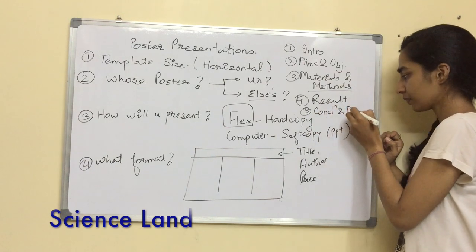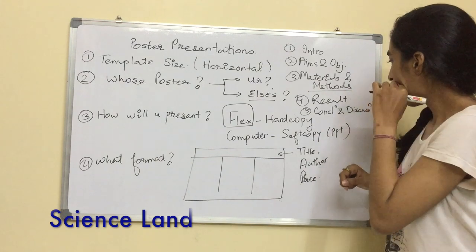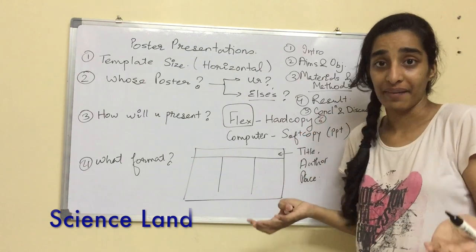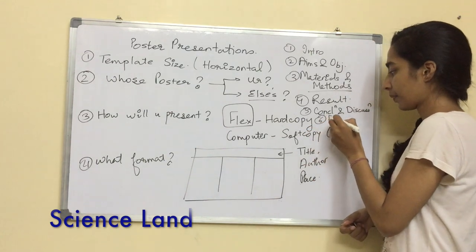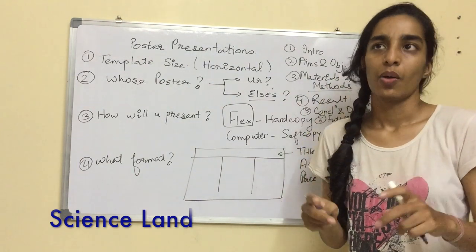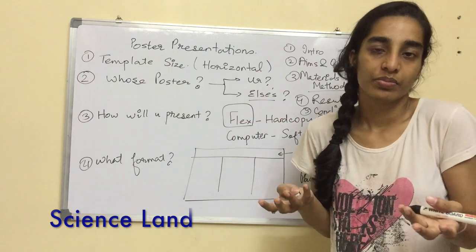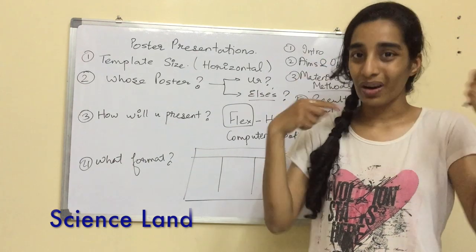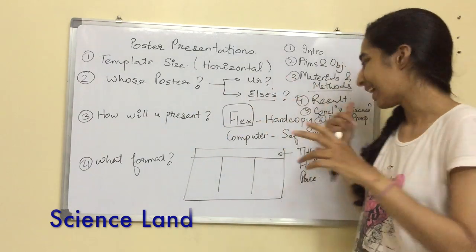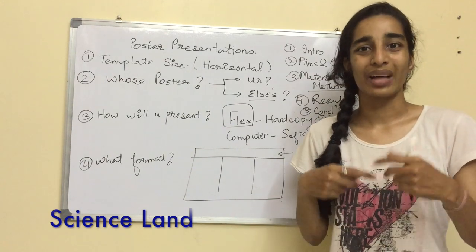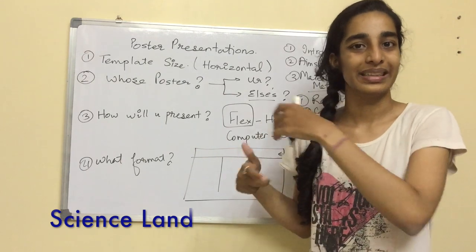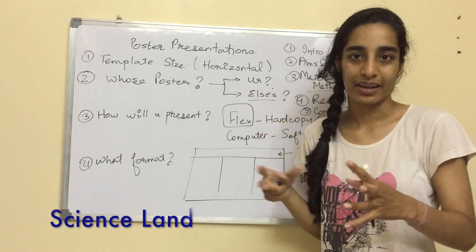Sixth could be future prospects. Some people don't have this; some do. You found out something regarding a particular product—what could be the future prospect of that product according to you? This is completely up to you whether you want to include this or not. Seventh is acknowledgement, wherein if it's your paper, you thank somebody. That particular statement is you're grateful for somebody's help or somebody's department.